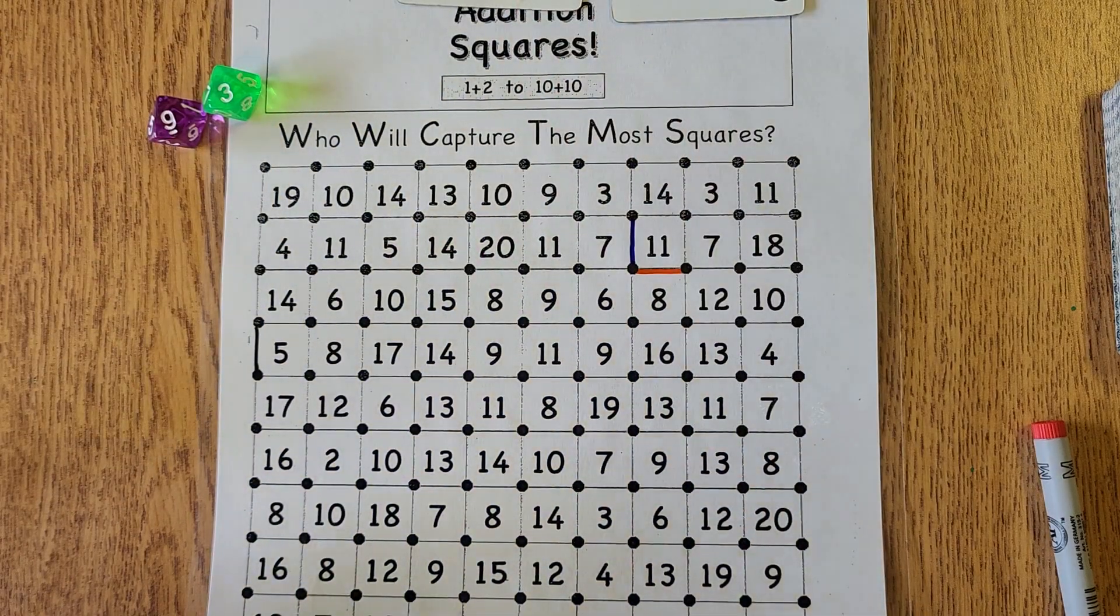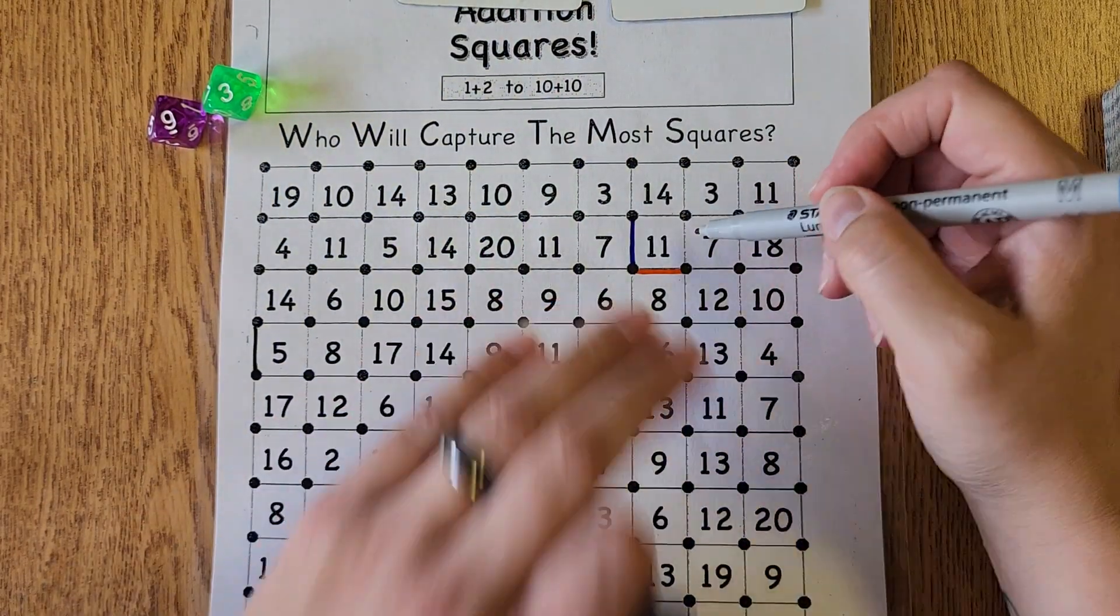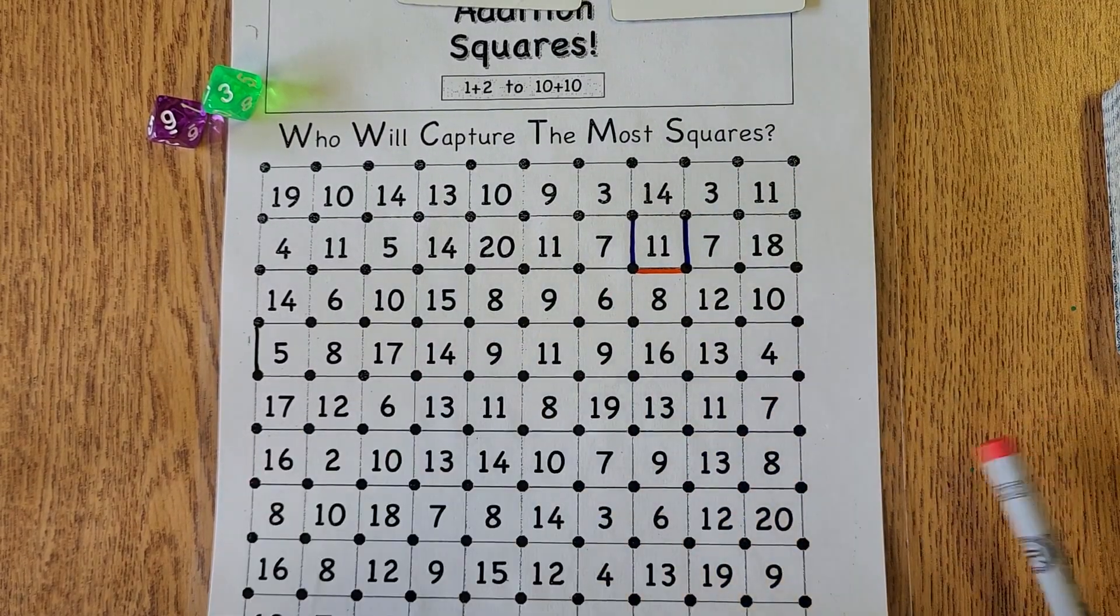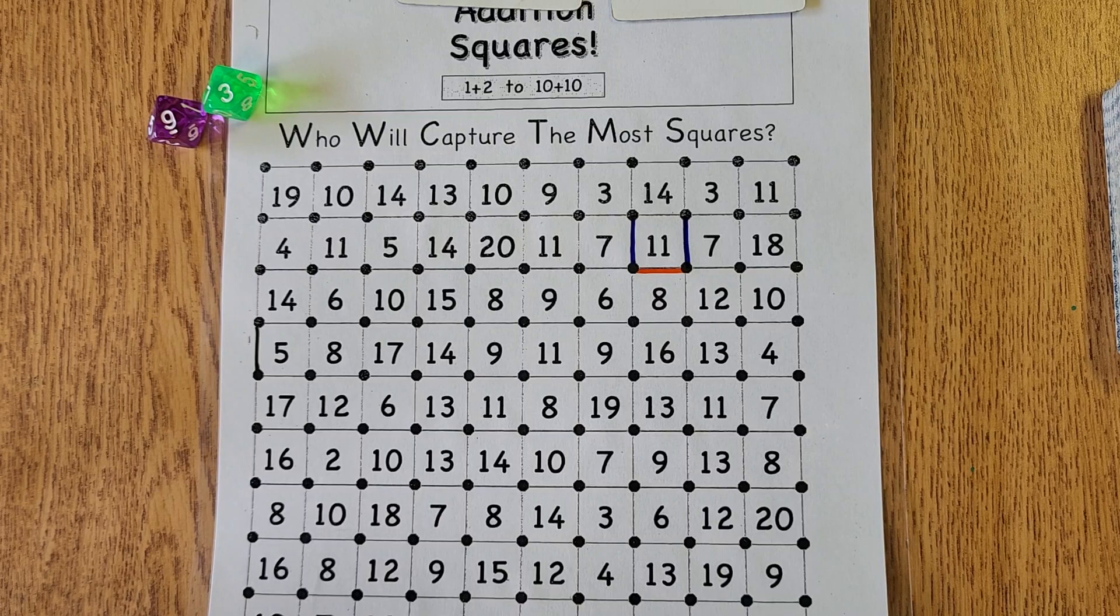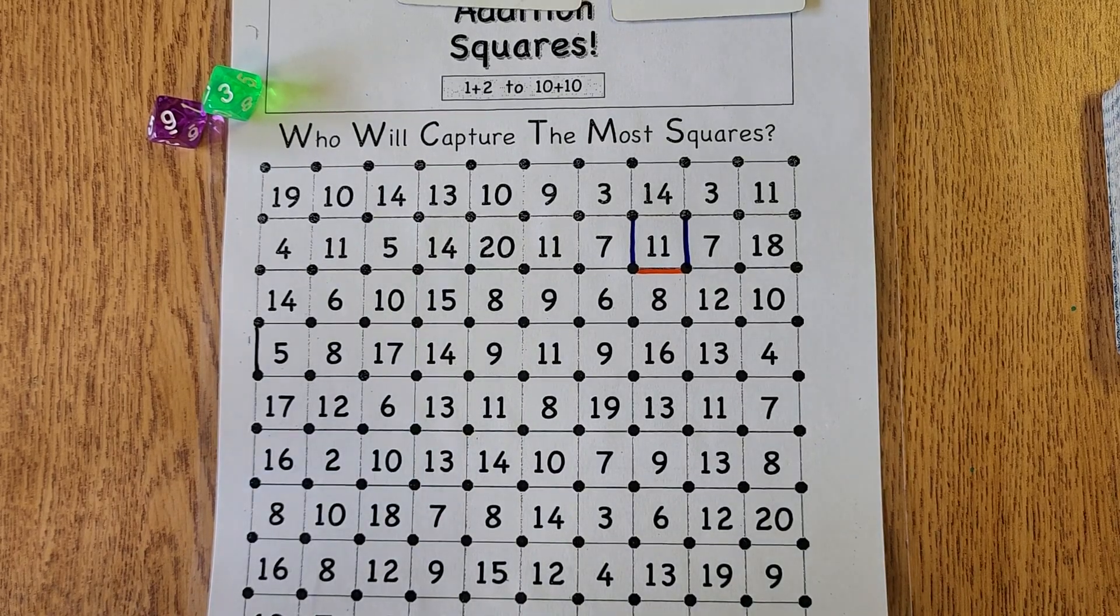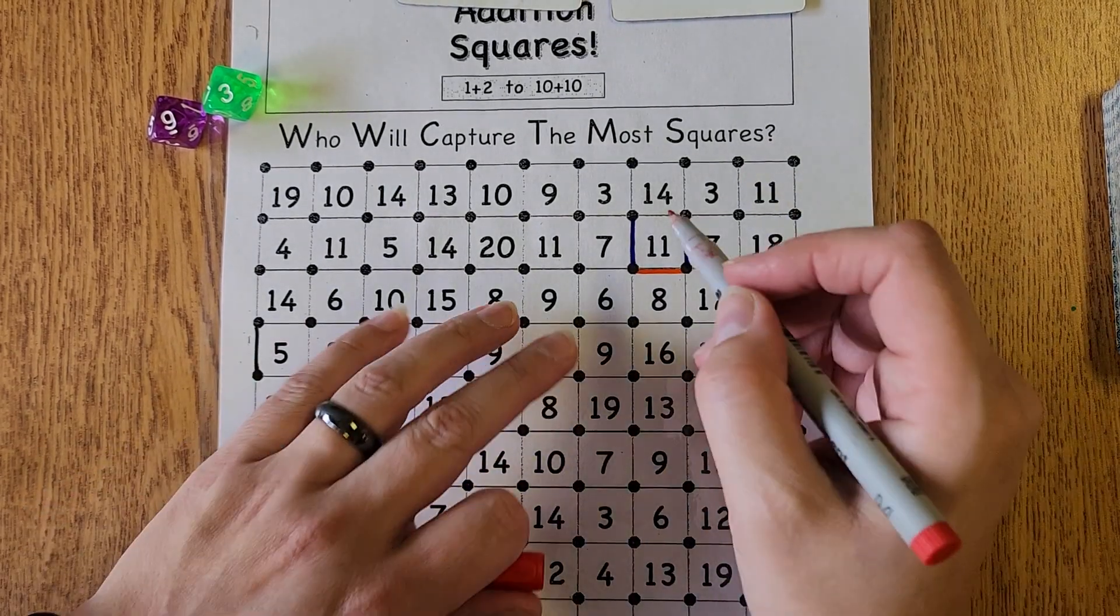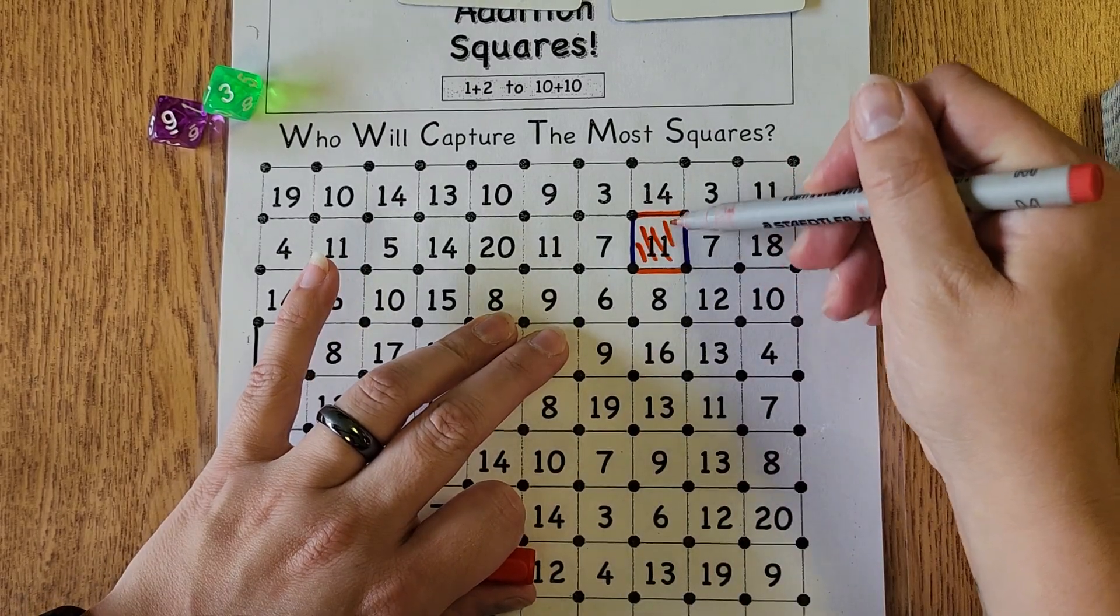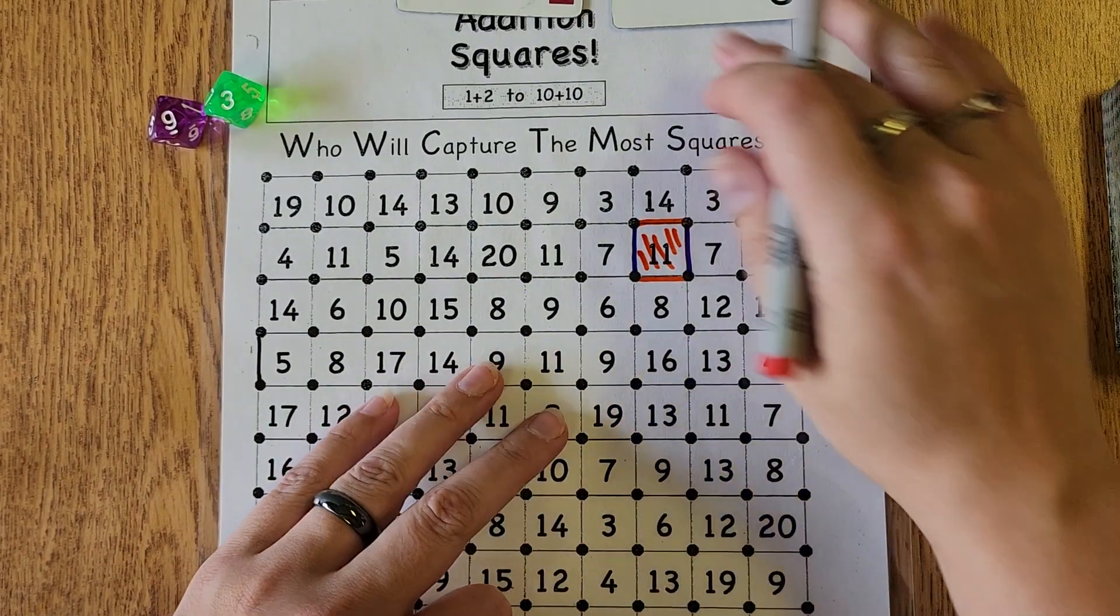They will continue to flip over cards or roll the die and let's say for example this person has made this box look like this. If it's the red player's turn and they closed this box they get to color it in and they get one point on their team.